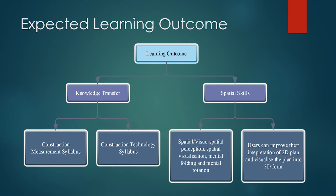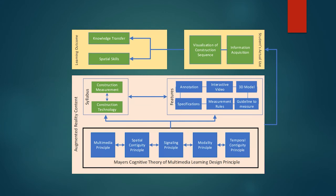These identified constructs are combined to form the CMAR framework. The framework is split into three sections: augmented reality content, student actual use, and learning outcome. Mayer's CTML five design principles for learning using augmented reality help educators design learning modules based on the design principle requirements.